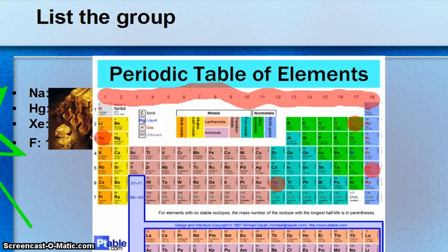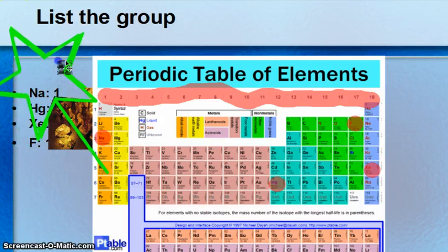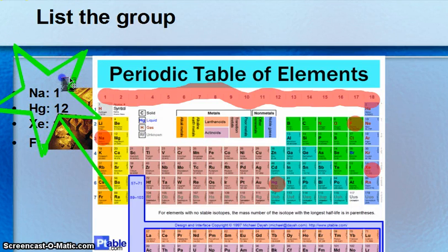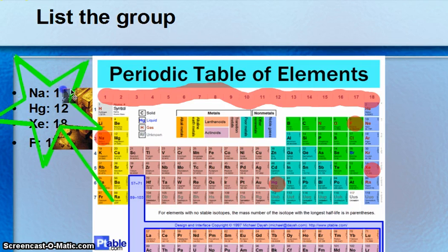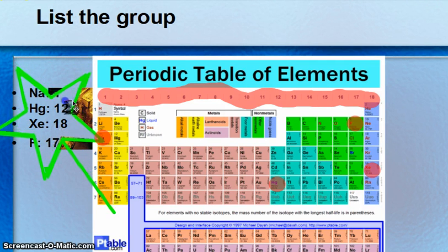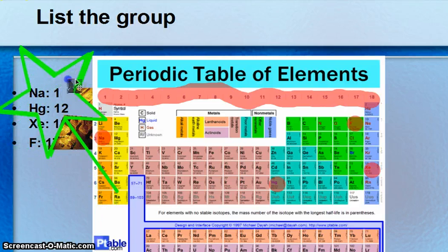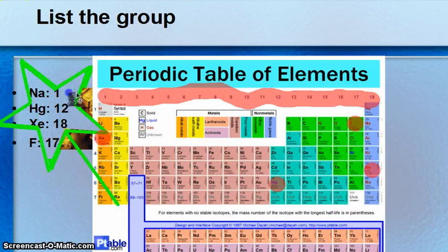So let's check our answers here. For NA, it's period one. I'm sorry, family one. HG, it's group or family 12. Xenon is family 18. And fluorine is family 17. So it's really easy to, as long as you have a chart, really easy to find the group or family number.